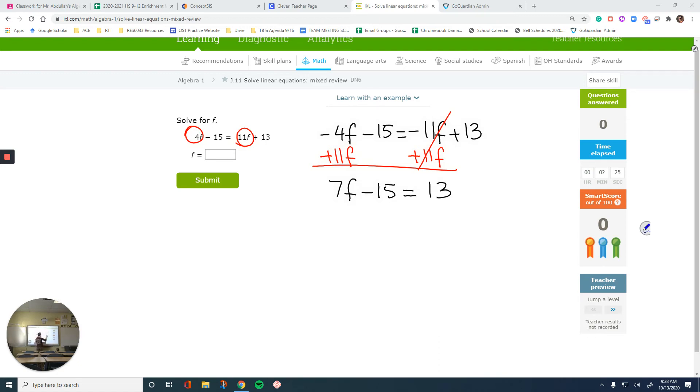And then now the like terms are the numbers. Since the variable is on the left, I'm adding 15 to cancel that negative 15 out. So 7f equals 13 plus 15 is 28. That's not done. We need to get the f by itself. It is 7 times. I divide each side by 7. So f would be equal to 4.